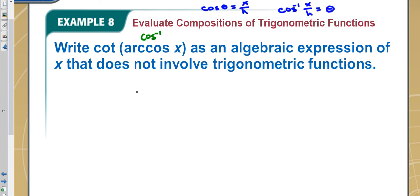That means in this situation, cos inverse of x, there would have to be a denominator. I'll make it one because there's nothing down there. That means x is x and one is h. I'm going to draw.